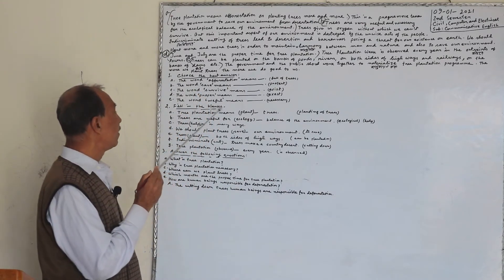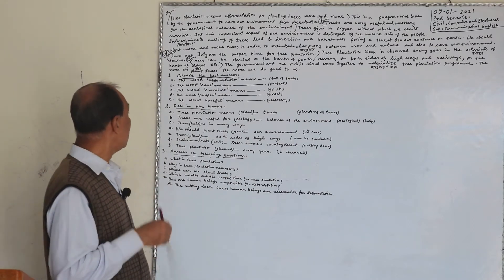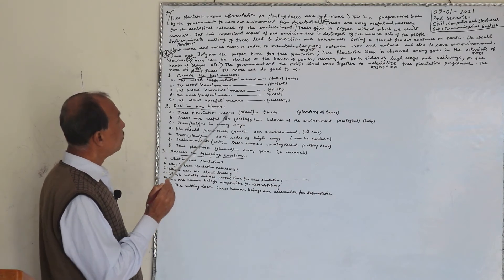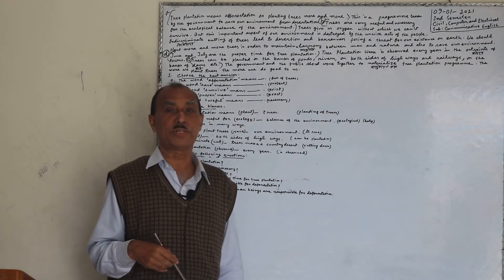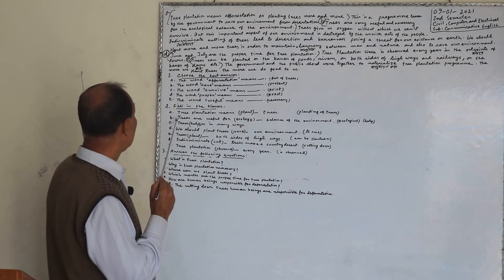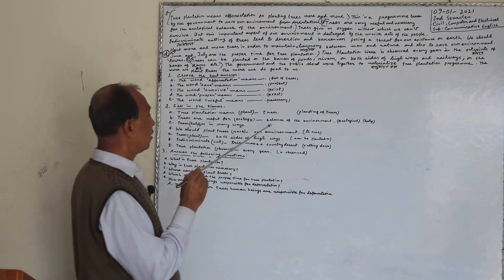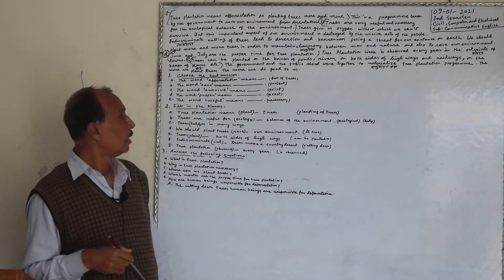Number two, fill in the blanks. Trees are useful for, tree plantation means plant trees, planted puri vartya have a planting of trees. Trees are useful for ecology, dash balance of our environment, ecological.